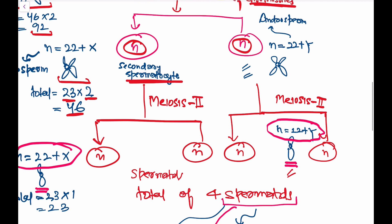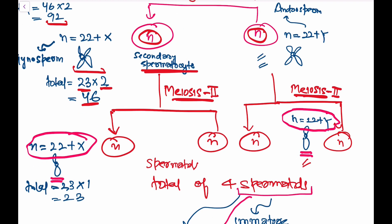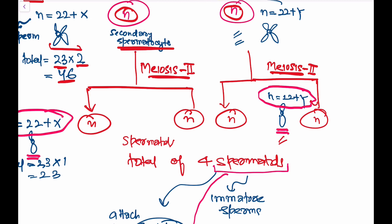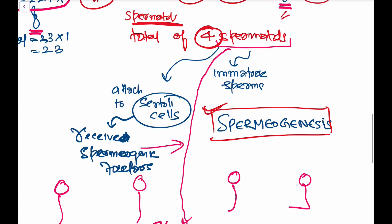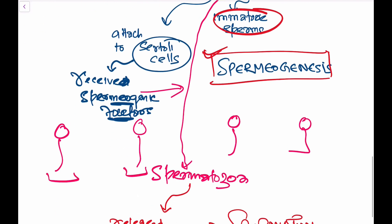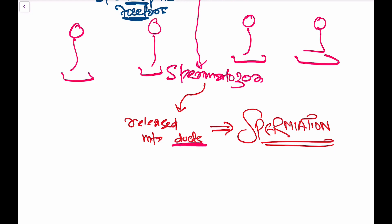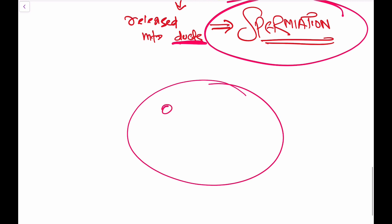Meiosis II reduces chromatids → four spermatids (22 + X or 22 + Y, 23 chromatids each). Spermatids attach to Sertoli cells, receive spermiogenic factors, and transform into spermatozoa — a process called spermiogenesis. Finally, spermatozoa are released into the ducts in a process called spermiation. This topic is very important for your NEET and board examinations. Hope you enjoyed the video — have a very nice day!